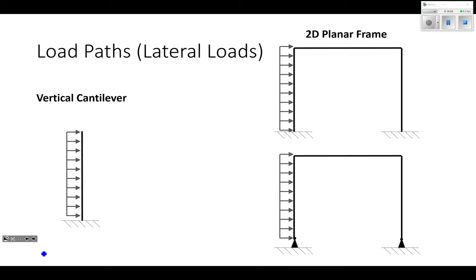Now let's look at lateral loads — wind loads and seismic loads — which are generally acting horizontally. First, let's look at a vertical cantilever. If I apply a lateral load to a fixed cantilever, it's going to deflect. That causes a horizontal reaction and a moment, meaning I have shear and moment in my vertical cantilever — it's just like a horizontal cantilever turned on its side.